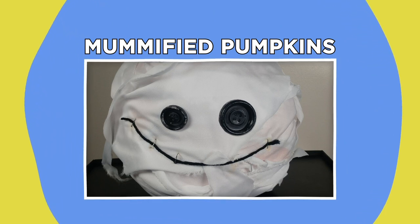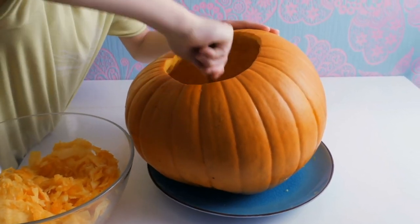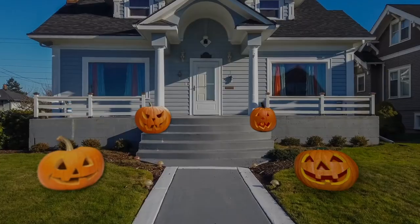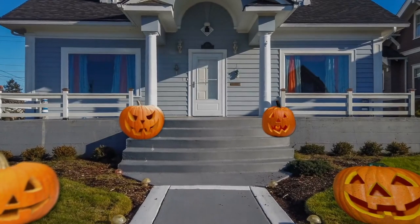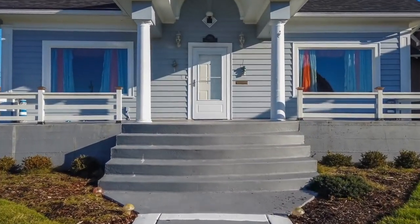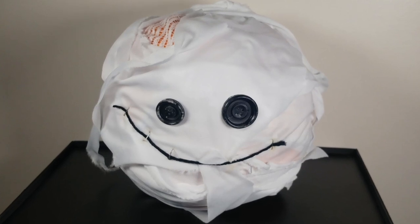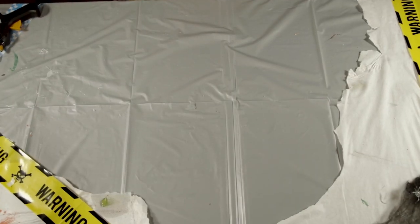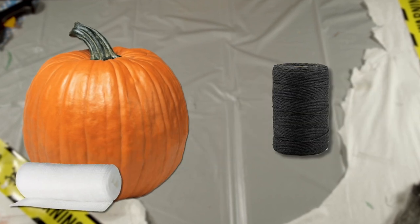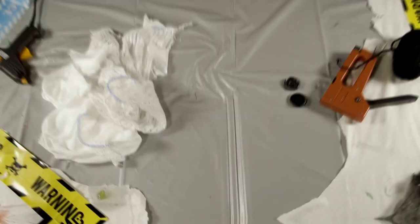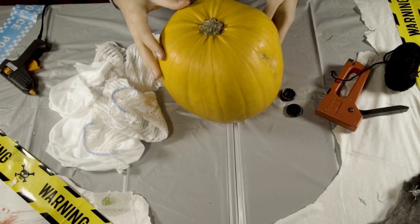Mummified Pumpkins. Carving pumpkins is great fun, but it can also be messy and time consuming. So, if Halloween is just around the corner and your front porch is looking suspiciously bare, fear not. I have a quick and easy solution for you. Before you start, you'll need to gather the following things. A pumpkin of your choosing, some gauze or bandages, black string, hot glue, a staple gun, and some black buttons. I bet you've got most of that lying around the house already, right? I personally think small pumpkins look the cutest, but you can choose any size. Just remember that you'll need more materials.